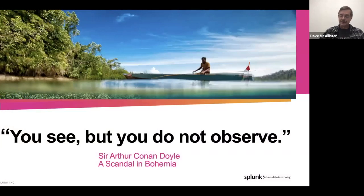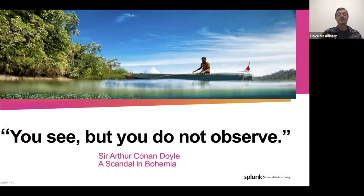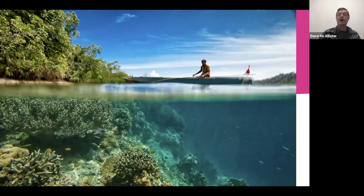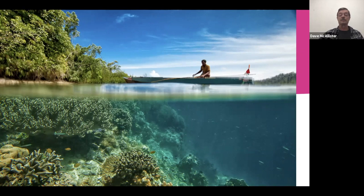Let's start here. In an age of observability, this is still perhaps one of my favorite quotes: 'You see, but you do not observe.' Arthur Conan Doyle wrote this in A Scandal in Bohemia. It applies quite well because when we look at observability, especially as things get more complex, people look sort of across the top and miss all of the underlying functionality. We need to look at multiple dimensions to really understand what's going on.